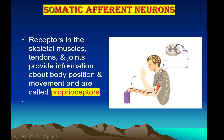Receptors in the skeletal muscle, tendons, and joints provide information about body position and movement and are called proprioceptors. They provide information about the position of body parts — where the hand and leg are located, and their movements. This sense of body position is called proprioception.